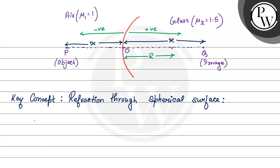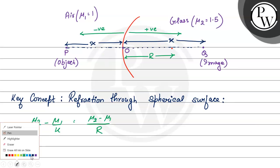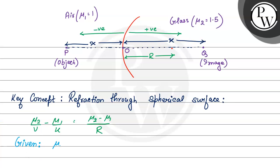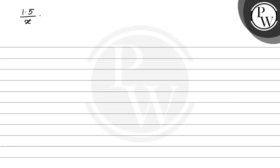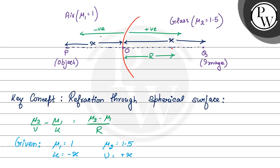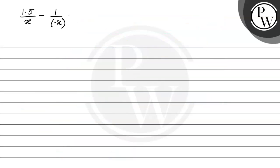The formula for refraction through a spherical surface is: mu2 by v minus mu1 by u equals mu2 minus mu1 by R. Given: mu1 equals 1, mu2 equals 1.5, u equals minus X (left-hand side), and v equals plus X (right-hand side). Substituting: 1.5 by X minus 1 by (minus X) equals 1.5 minus 1 divided by R.